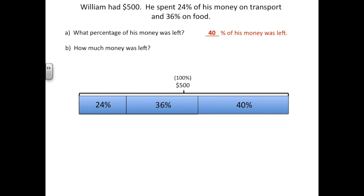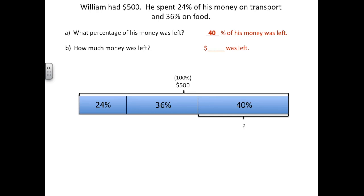We now want to find how much money was left. We know that 40% of his money was left, but now we want to find the actual dollar amount. So we can label the 40% with a question mark — we're looking for 40% of the whole dollar amount, which is 40% times 500. We then want to rewrite this as a fraction to solve: 40% is the same as 40 hundredths times 500, which is 500 over 1.